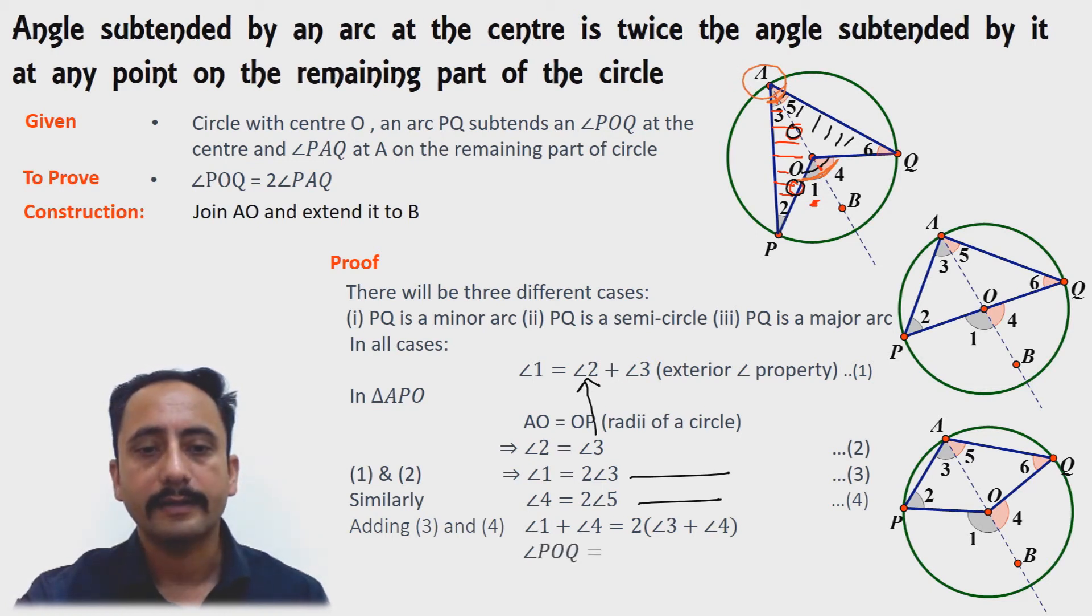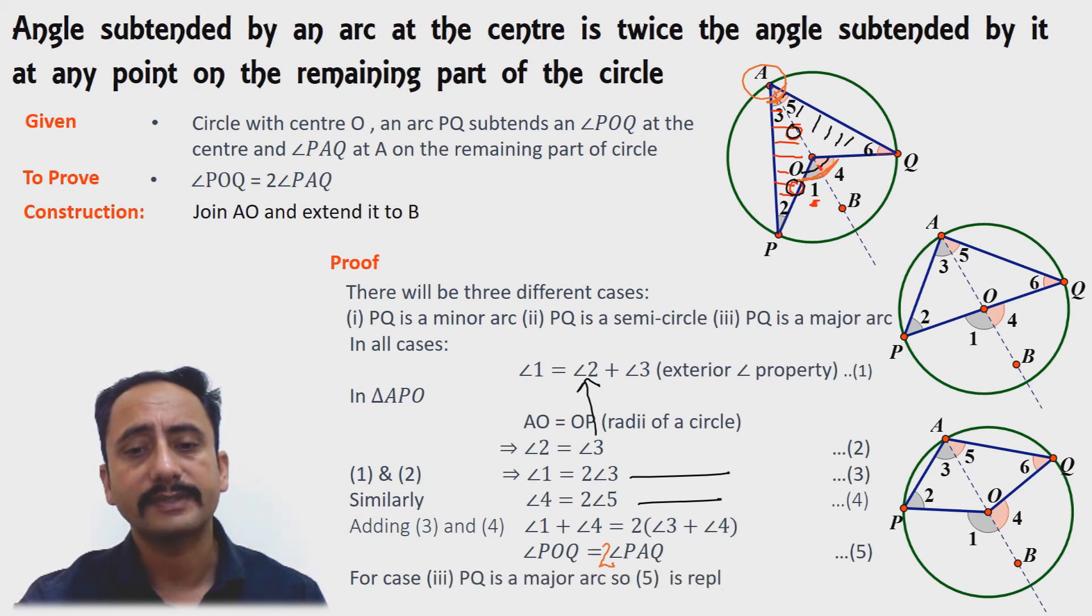Angle 3 plus 5 is nothing but angle PAQ, and we will get angle POQ equals twice angle PAQ. In the third case, the only difference is we will write the word reflex because the angle is greater than 180 degrees. So reflex angle POQ equals twice angle PAQ. Hence the proof of the theorem.